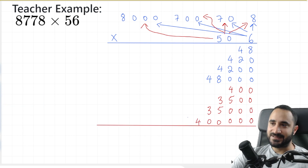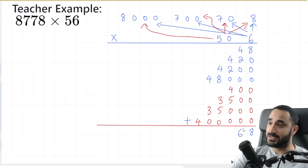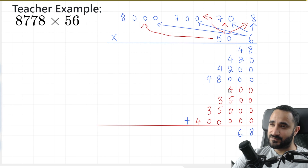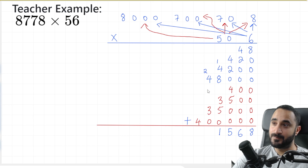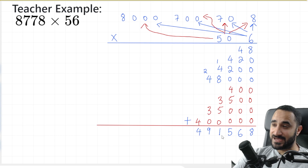Now let's add these numbers together. So 8 plus a bunch of zeros is just 8. 4 plus 2 is 6, and then adding zeros just stays a 6. Now we're going to have 4 plus 2 is 6, plus 4 is 10, plus 5 is 15 — so I write 5 here and carry over the 1. 1 plus 4 is 5, plus 8 is 13, plus 3 is 16, plus 5 is 21 — so it's going to be a 1 here, carry the 2 over. 2 plus 4 is 6, plus 3 is 9, and then 4 plus nothing is just 4. So our final answer is 491,568 — and if we check our answer, there it is. And that's our final example.